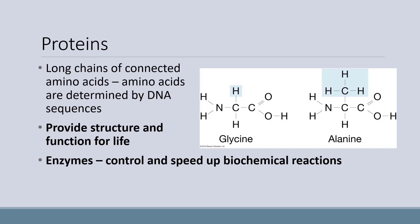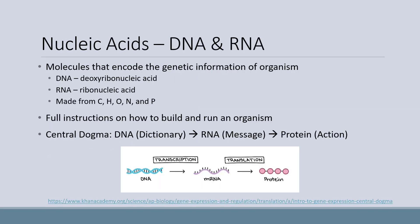Proteins are next. Proteins are long chains of connected amino acids. Specific amino acids are determined by different DNA sequences. Proteins provide structure and function for life. Enzymes, which are a type of protein, control and speed up biochemical reactions. Glycine and alanine, pictured here, are examples of amino acids.